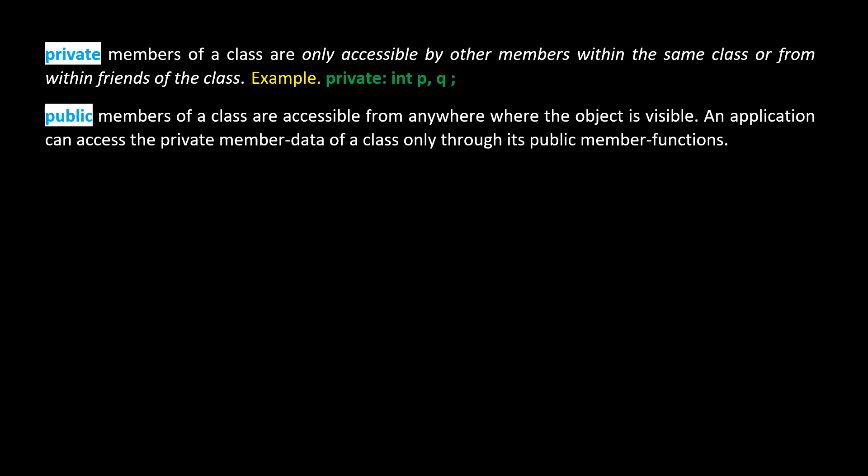Public members of a class are accessible from anywhere where the object is visible. An application can access the private member data of a class only through its public member functions. For example, 'public: int p, q;' declares p and q with public visibility.